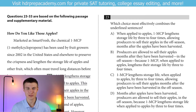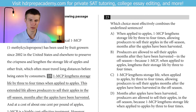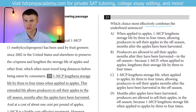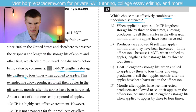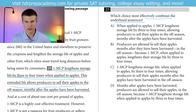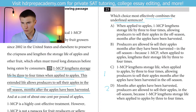Moving on to passage three: 'How do you like those apples?' Marketed as SmartFresh, the chemical 1-MCP (1-methylcyclopropene) has been used by fruit growers since 2002 in the United States and elsewhere to preserve the crispness and lengthen the storage life of apples and other fruit, which often must travel long distances before being eaten by consumers. We're asked which choice most effectively combines the underlined sentences. 1-MCP lengthens storage life by three to four times when applied to apples. This extended life allows producers to sell their apples in the off-season months after the apples have been harvested.